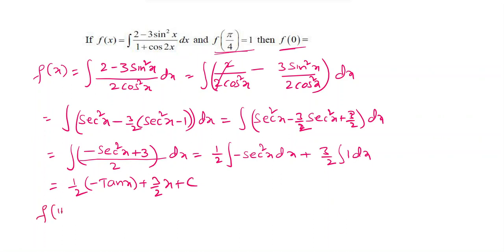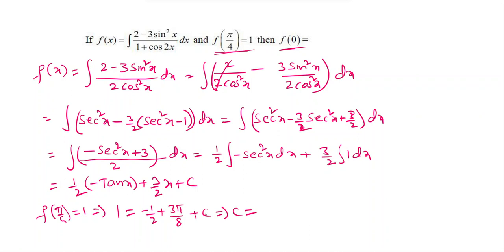Given f(π/4) = 1, substituting x = π/4: 1 = minus(1/2)(tan π/4) plus (3/2)(π/4) plus c, which gives 1 = minus 1/2 plus 3π/8 plus c. So c equals 1 plus 1/2 minus 3π/8. Taking LCM of 8, this is (8 plus 4 minus 3π) by 8.